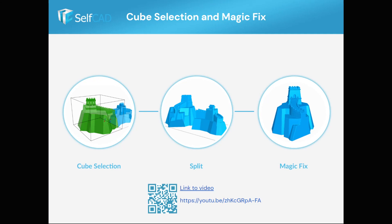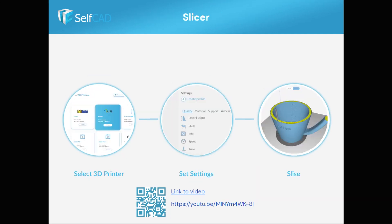SelfCAD has all of this included. You can see how to cut an object into pieces and how to use magic fix to make an object printable. In this example, you can see how to select your printer and use the slicer to get the gcode.